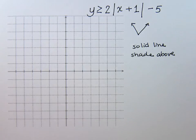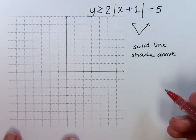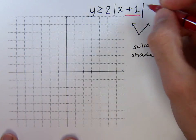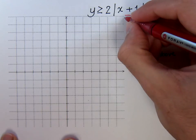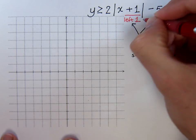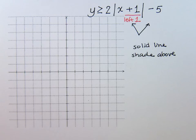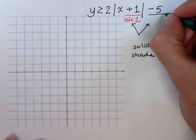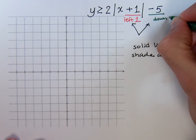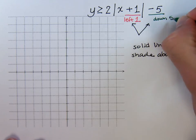The rest of this is just graphing the absolute value itself, which hopefully by this time should not be too difficult. The plus 1 inside — we do the opposite of that — so that means we're going to go to the left 1 unit. And then the minus 5 at the end, you do exactly what it says, and you're going to go down 5 units.